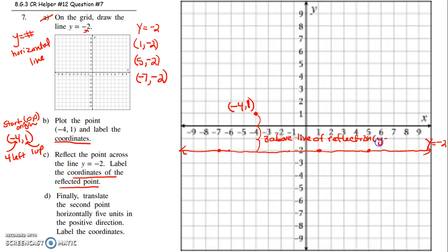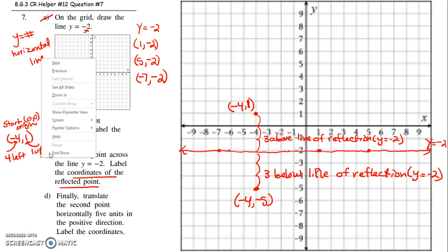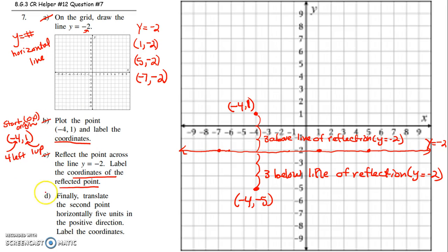which is your y equals negative 2. Then when you're going to plot the image, you have to go 1, 2, 3 below. You need to go 3 below line of reflection. So then you have to go 3 below y equals negative 2. And that point would be negative 4, negative 5. Okay? I'm just keeping track of what I've done.